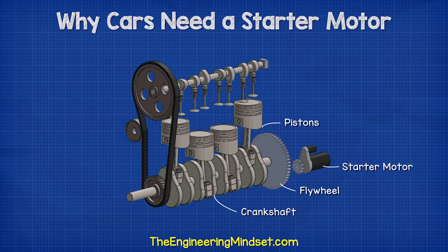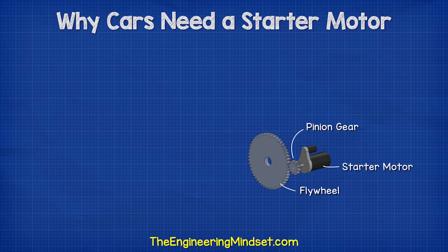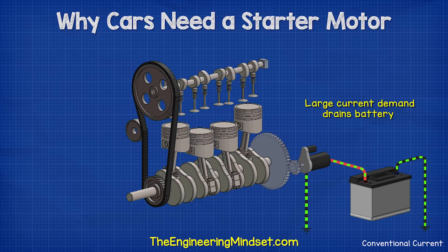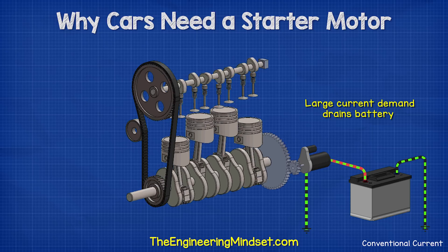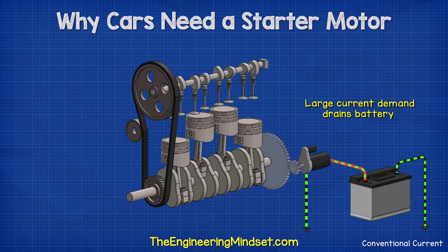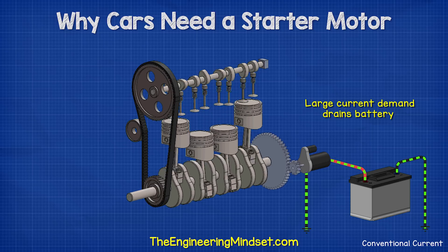As the pinion gear is very small in relation to the flywheel, it must rotate at a fairly high speed. It also requires a high torque to rotate the crankshaft. The starter motor therefore draws a very large current from the battery when it starts.